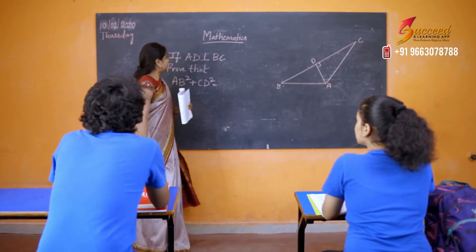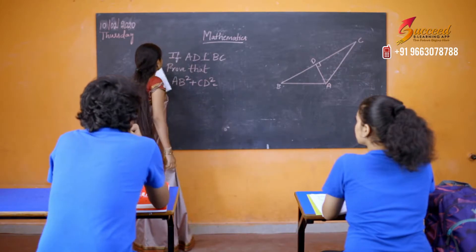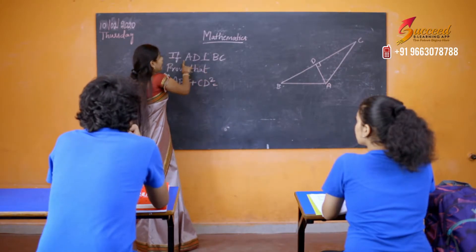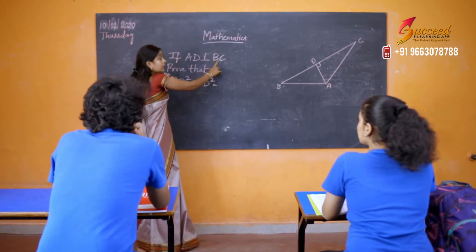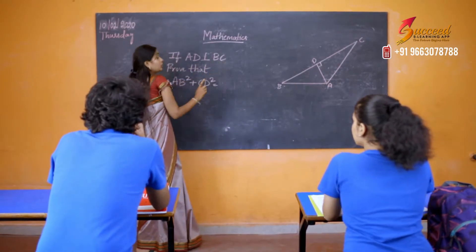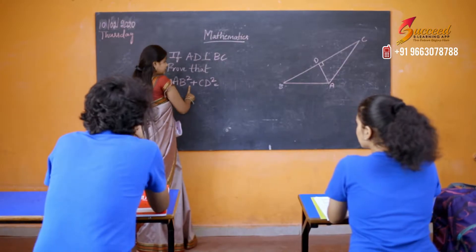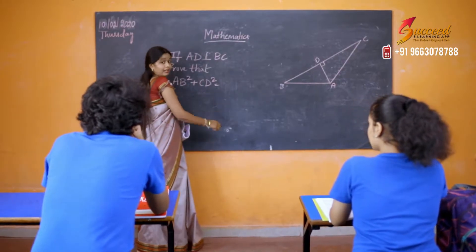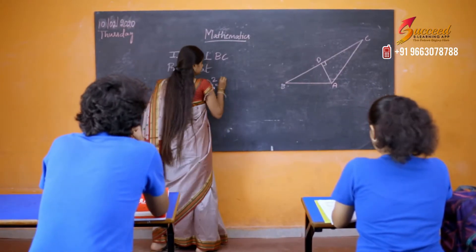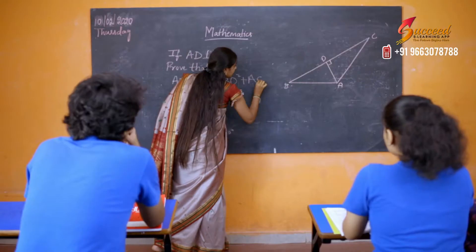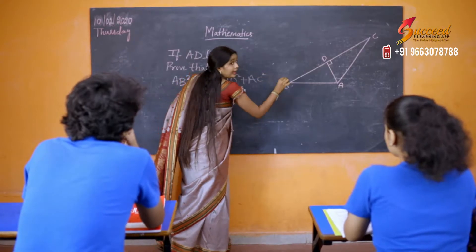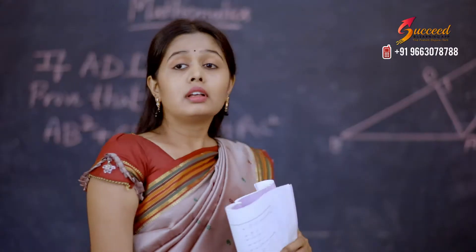Let's go to the next question. If AD is perpendicular to BC, you have to prove that AB square plus CD square is equal to BD square plus AC square.